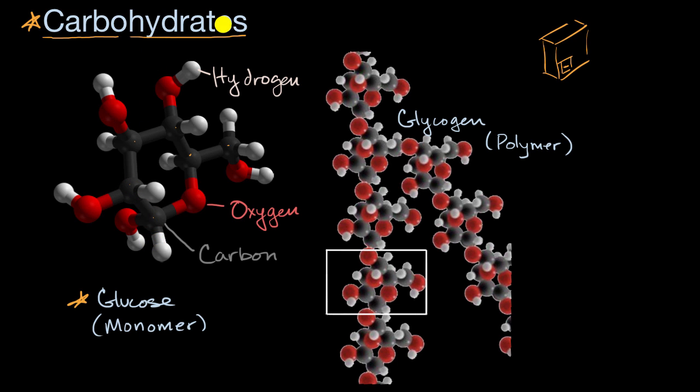And the hydrate part refers to that carbohydrates typically have oxygen to hydrogens in the same ratio as you would expect in water. So for every one oxygen, two hydrogens. And you see that right over here, where in glucose you have one, two, three, four, five, six oxygens and you have 12 hydrogens. And so that's where this word comes from.